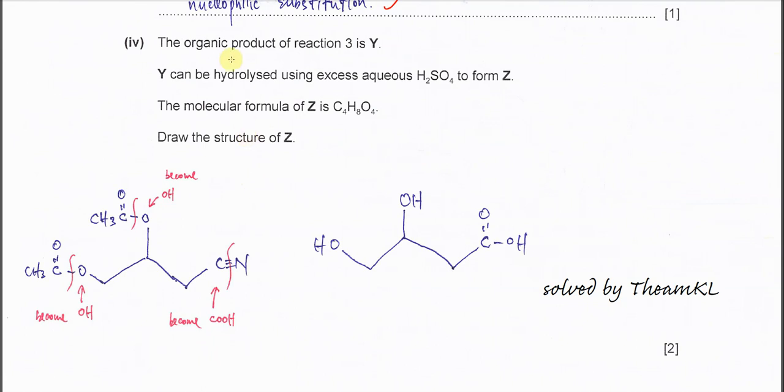Part C(iv). The organic product of reaction 3 is Y. Y can be hydrolyzed to form Z. Draw the structure of Z with this molecular formula. This is Y, and the ester group will undergo hydrolysis. The bond breaks here and this O will form OH, and this O also becomes OH back. The C≡N triple bond will break and this carbon becomes COOH. The nitrogen will form ammonia. Eventually it forms this structure with 2 OH groups and 1 COOH.